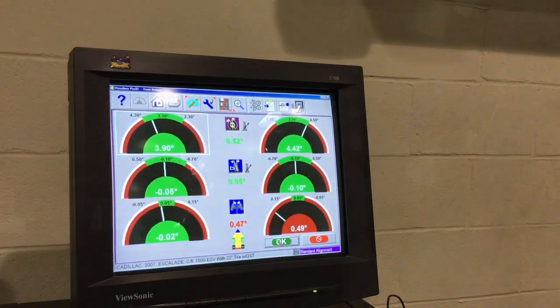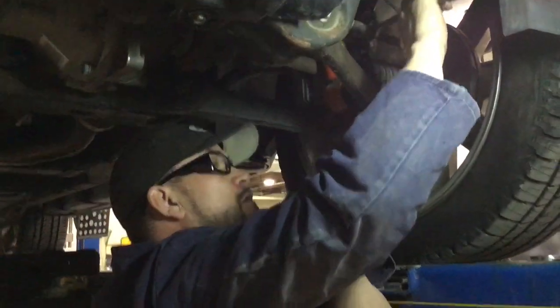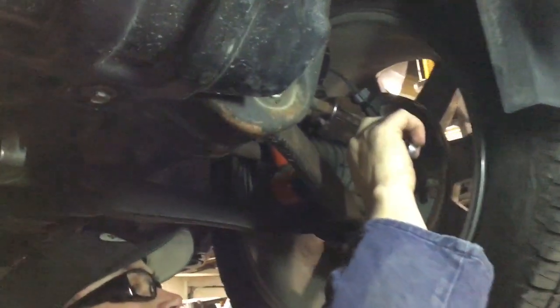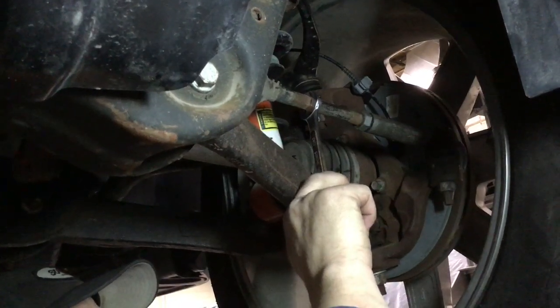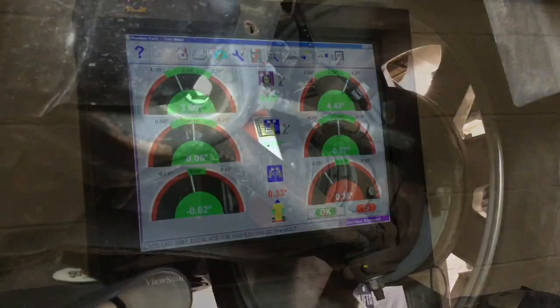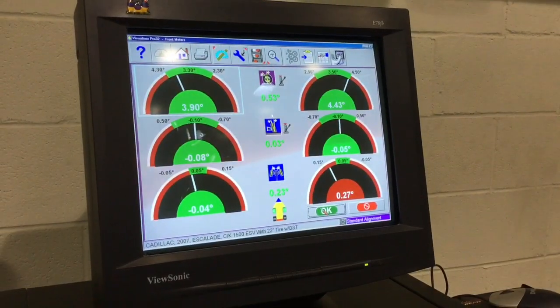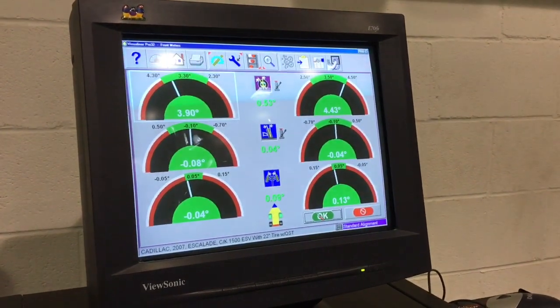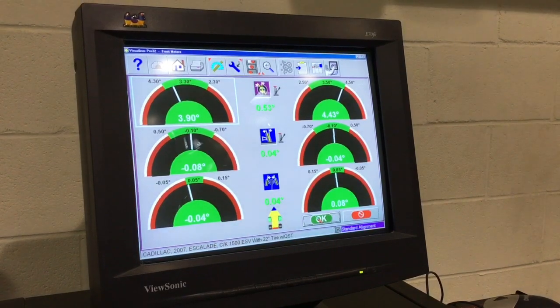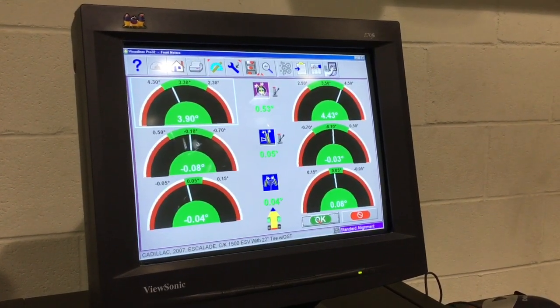Here I am adjusting the final adjustment on the wheel alignment, which is the front toe. The last thing to do once done adjusting the tie rod is to make sure that the jam nut is secure. Here we can watch the monitor as Rob is adjusting the inner tie rod, which is then adjusting the toe settings.